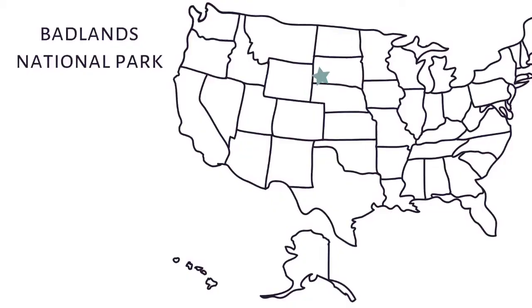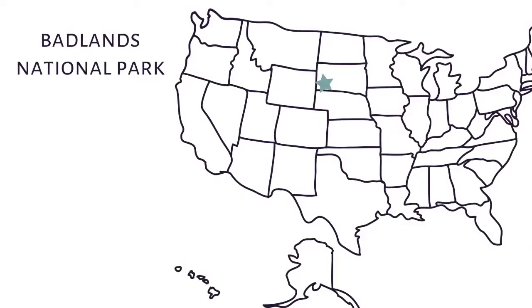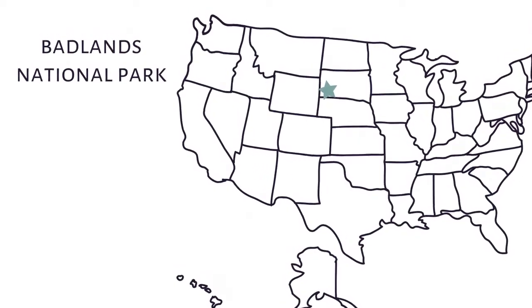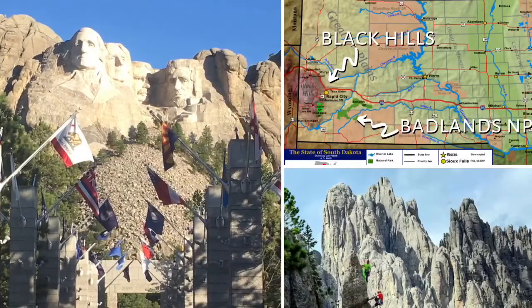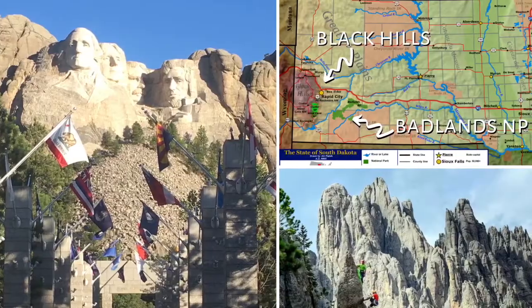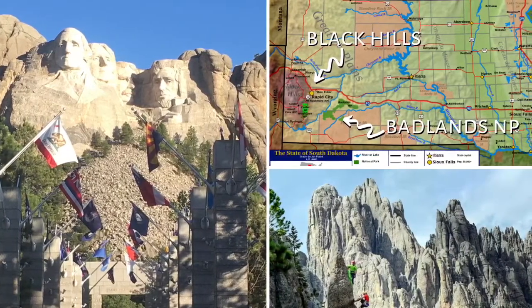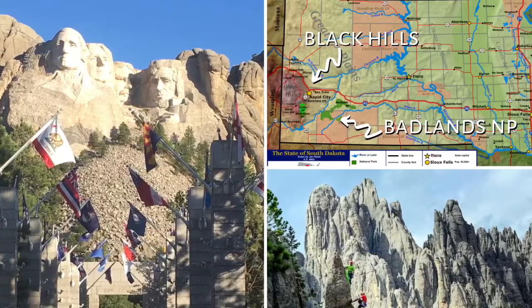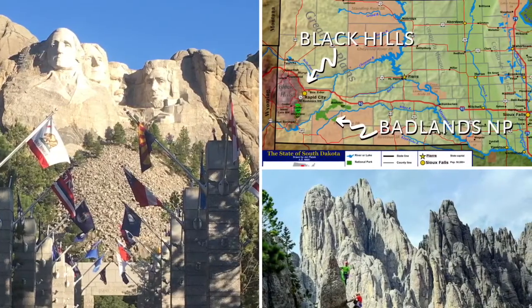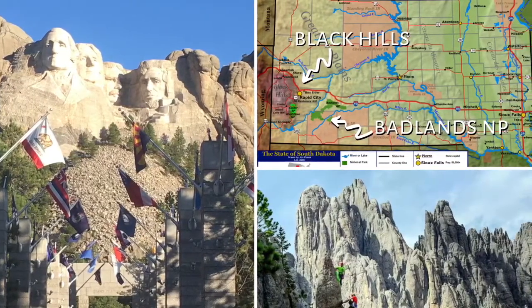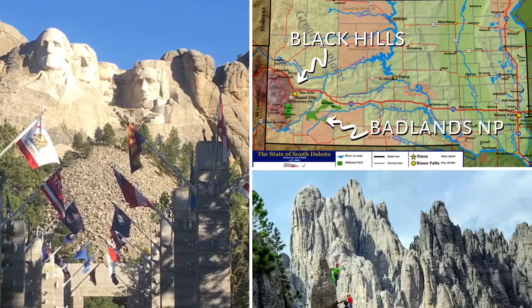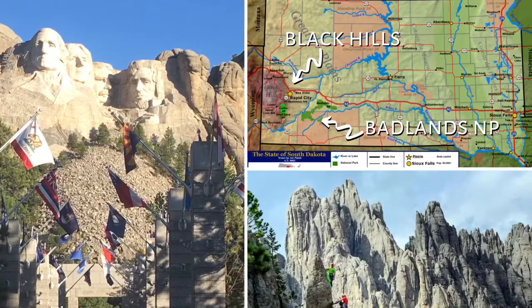The park that I'm going to talk to you about today is Badlands National Park. Badlands National Park is in South Dakota. You know Mount Rushmore — Mount Rushmore is about a little over an hour drive away from Badlands National Park. And Mount Rushmore is in the Black Hills mountain range, a small mountain range that is west of Badlands National Park.